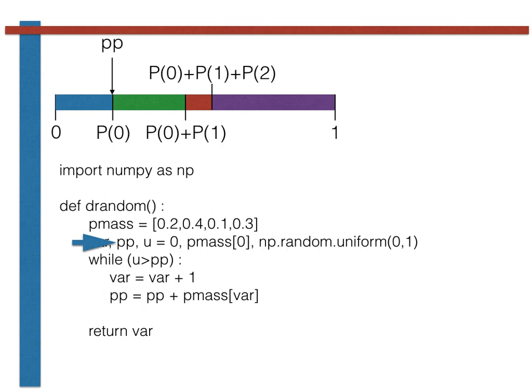If u is greater than PP, however, then we enter the loop. The variable VAR is incremented by 1 and P1 is added to PP, so its value shifts to the end of the green segment. On the second time through the while loop, we are thus testing if u is greater than P0 plus P1. If this condition is not satisfied, then u must be in the green segment of the line, the function will stop and we will return a value of 1. If u is greater than P0 plus P1, however, we will go through the loop again.